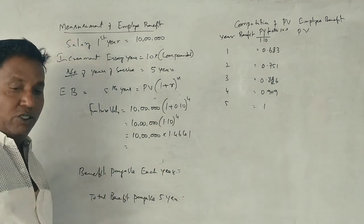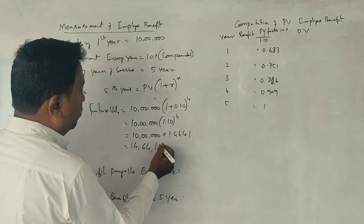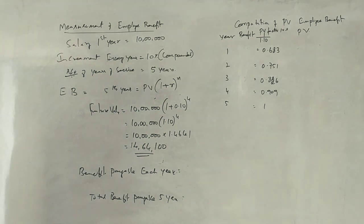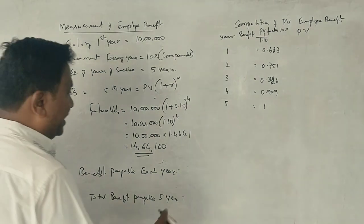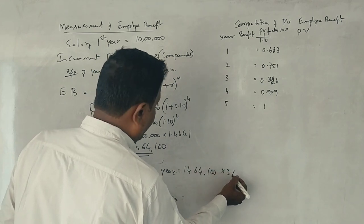So total is 14,64,100 rupees per annum. Future value is 3% of this amount.